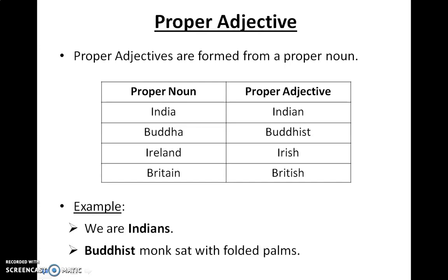Proper adjective. Proper adjectives are formed from a proper noun. For example, India, Buddha, Ireland, and Britain are all proper nouns. By using them, the proper adjectives formed are: Indian, Buddhist, Irish, and British. Examples: 'We are Indians.' 'Buddhist monks sat with folded palms.'